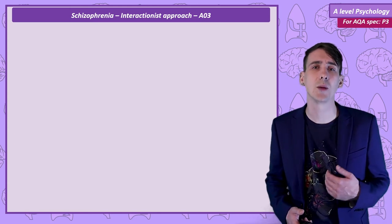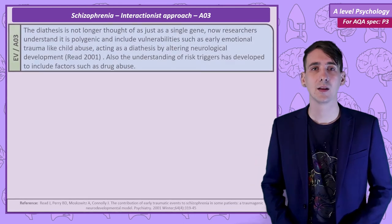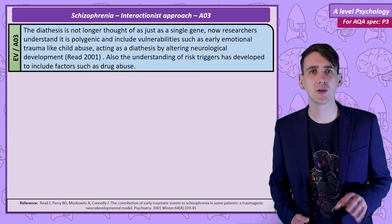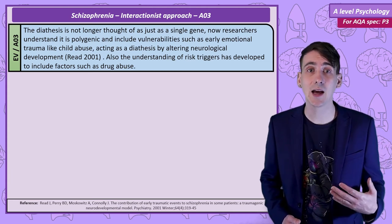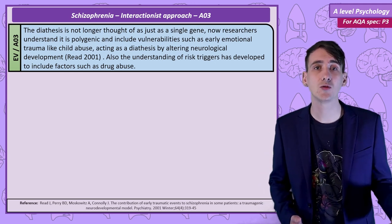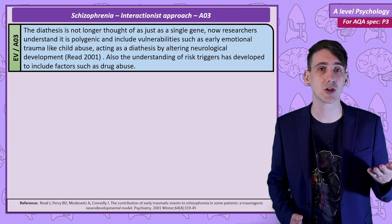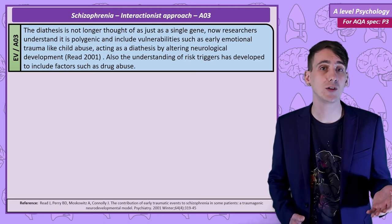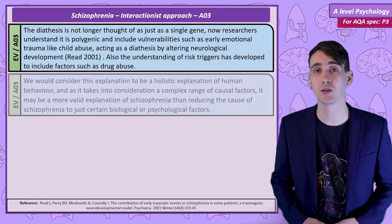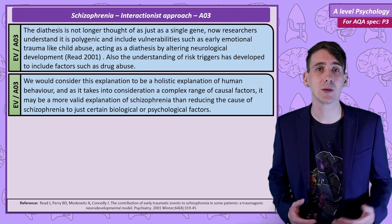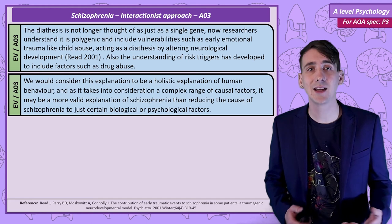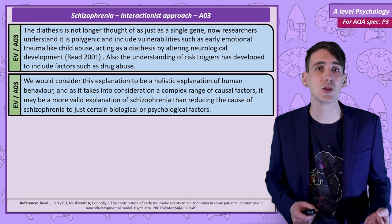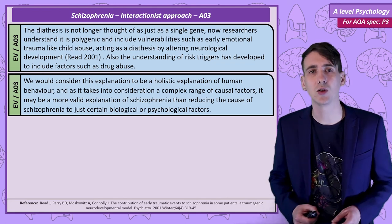Considering some potential additional evaluations: the diathesis-stress model has evolved over time in response to changing evidence, moving away from understanding diathesis as a single gene, to polygenic, and now including other vulnerabilities. For example, Reed provided evidence that early emotional trauma such as child abuse can act as a diathesis by altering neurological development, and the understanding of risk triggers developed to include factors like drug abuse. We would consider the diathesis-stress model to be a holistic explanation of human behaviour, taking into consideration a complex range of causal factors, making it potentially a more valid explanation than reducing the cause of schizophrenia to certain biological or psychological factors alone.